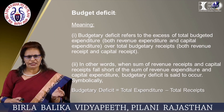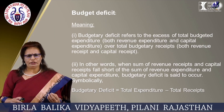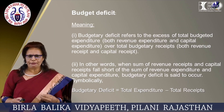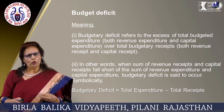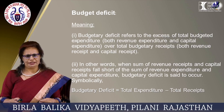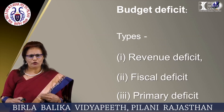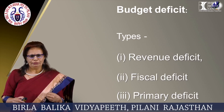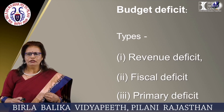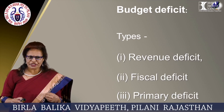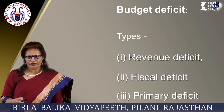Symbolically, budgetary deficit is equal to total expenditure minus total receipts. There are three types of budget deficit: revenue deficit, fiscal deficit, and primary deficit.